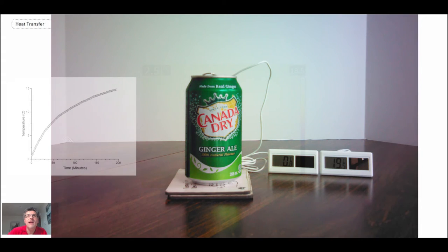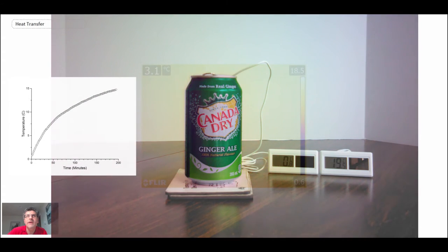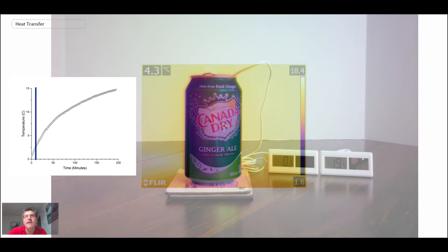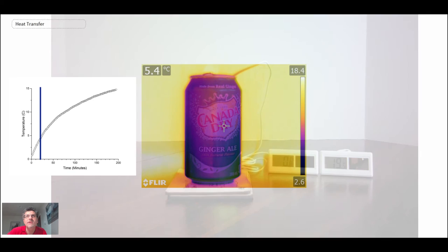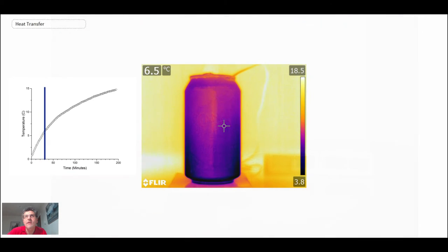We have a can that has just come out of the refrigerator. It was opened and a thermocouple was stuck inside. On the left hand side, we have the temperature distribution as a function of time, and superimposed on that, we have the results from an infrared camera viewing the same can sitting on the table.